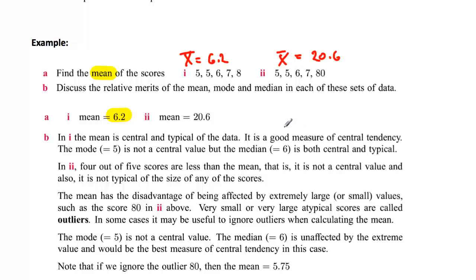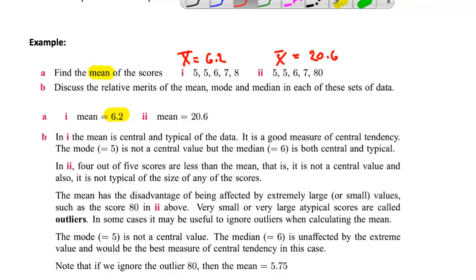Now have a careful look at those scores and you can see that one is a good measure of central tendency and the other is not, and it's pretty obvious which is which. So in number one it says the mean is central and it's typical of the data - it's a good measure of centralness so that's good, and it goes on to say the mode is 5, the median is 6, so it's all about the same. But in two, four of the five scores are less than the mean, so it's not a central value and therefore it's not a very good statement about the middleness of the scores.